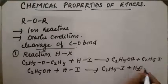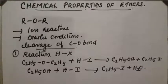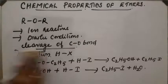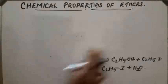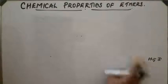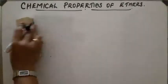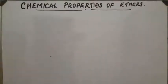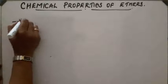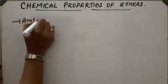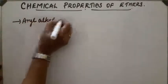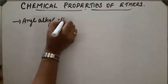C2H5OH reacts with HI when hydrogen iodide is in excess to form C2H5I plus H2O. The next case is when one group is aryl and the other group is alkyl — an aryl alkyl ether.